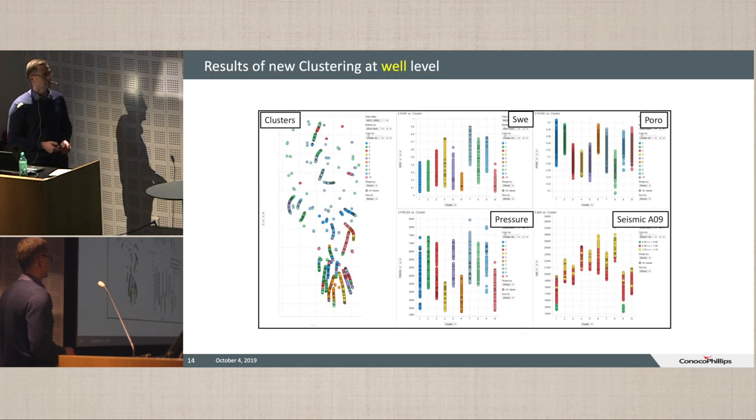So here you can see a dashboard showing the results of clustering at well level. So here you can see a cross plot of cluster number and the range of outcomes for the saturation, porosity within the cluster, pressure, and seismic. And that's how they distribute it across the field.